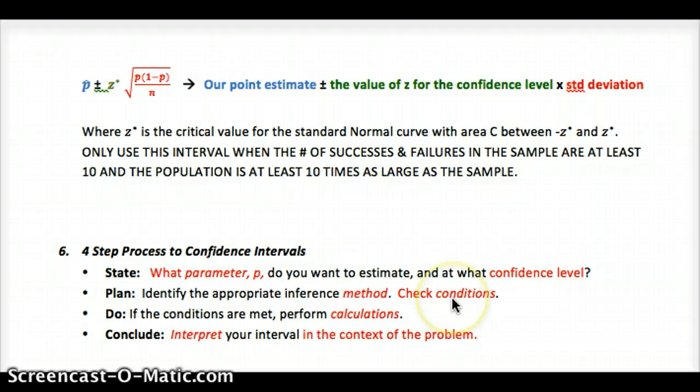What parameter do you want to estimate, and what confidence level? What inference method are you going to use? Meaning, what calculations do you need to use in order to determine it? Check the conditions: random, normal, independent. Think about why those are important, because in the do step, we need to have, use normal CDF or normal PDF in order to calculate this. Sorry about that. That was normal CDF and normal PDF for determining the percent or values in there. But what we're going to be using it for is so that we can use a Z-score, which depends on it being a normal curve. And then conclude means interpret your interval in the context of the problem. So explain what your confidence interval means, and that's what the sentence starter I gave you above for C% confidence level.